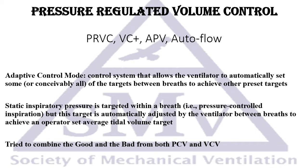There is confusion with names across different ventilator manufacturers. Some call it PRVC, some call it volume control plus, some call it APV — adaptive pressure ventilation — which is probably the closest to reality. Some ventilators even call it autoflow. A lot of the names really don't make much sense.